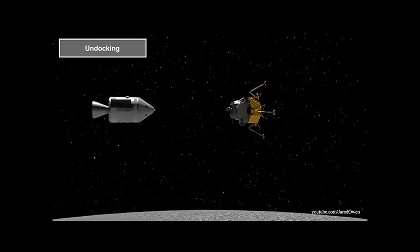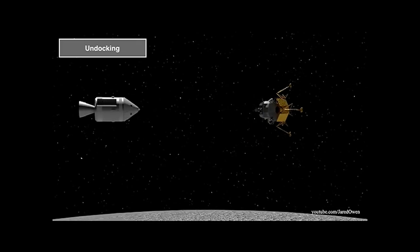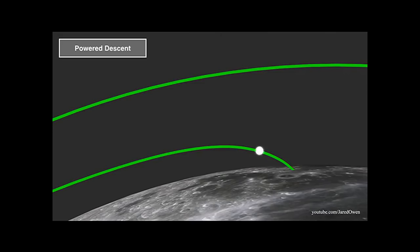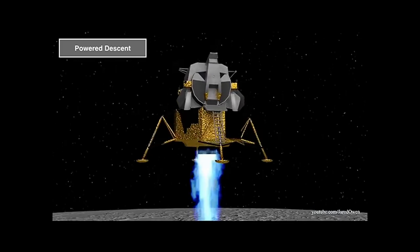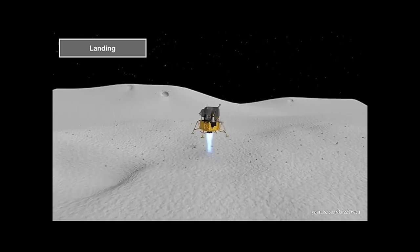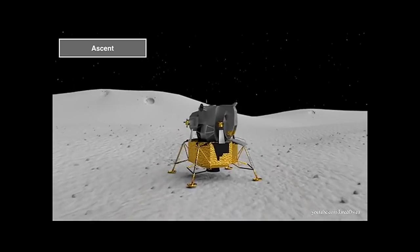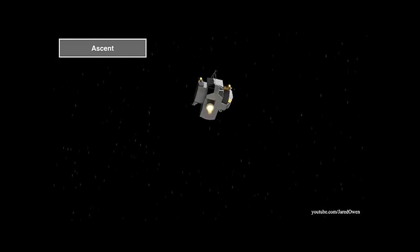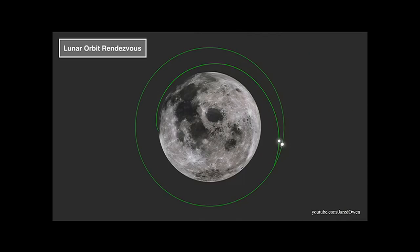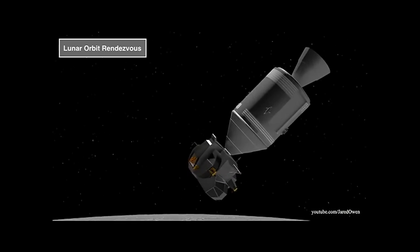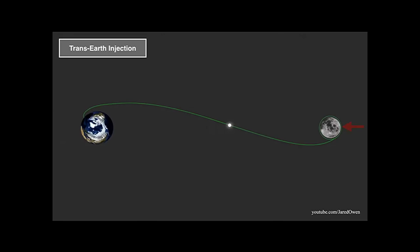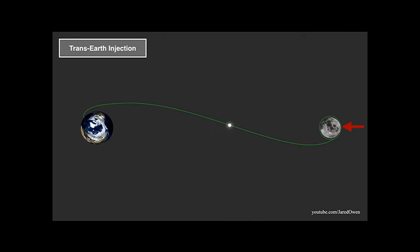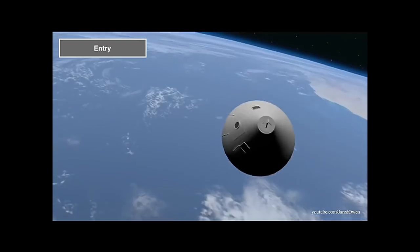After two of the astronauts have climbed into the lunar module and after undocking, the lunar module brakes — this is called powered descent — and lands. After taking off again, the lunar module rendezvous with the command and service module, and the two astronauts climb into the command module; the lunar module is jettisoned. The remaining command and service module accelerates at the far side of the moon for a trajectory towards Earth. For re-entry, only the command module remains.